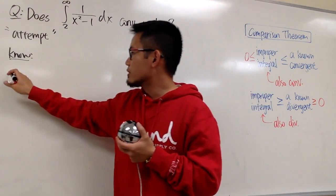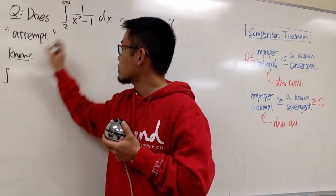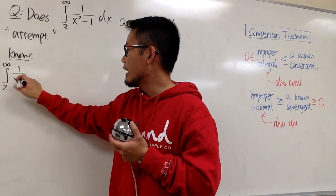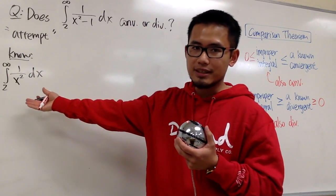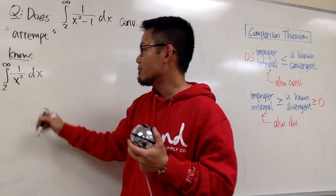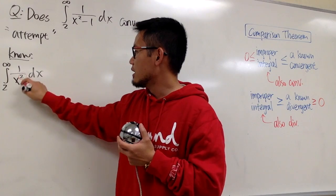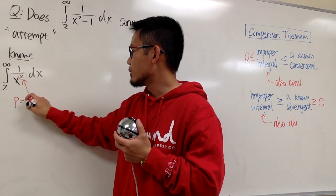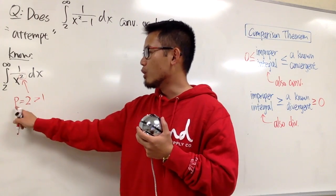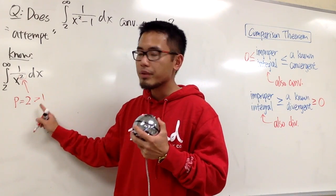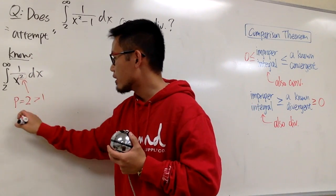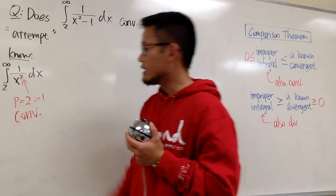I'm going to put down the integral from 2 to infinity of 1 over x squared dx. This is a really straightforward improper integral, because by the P-theorem, the P value is equal to 2, and 2 is greater than 1. When P is greater than 1 in the type 1 situation with an infinite interval, this converges.